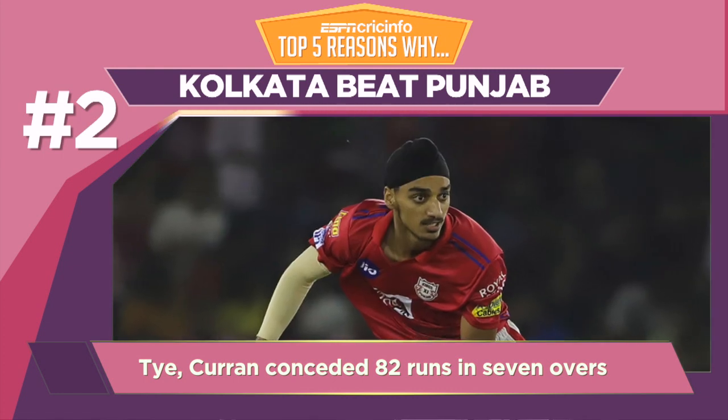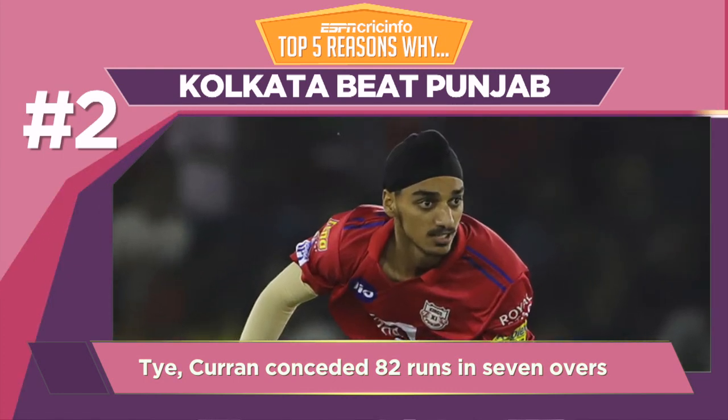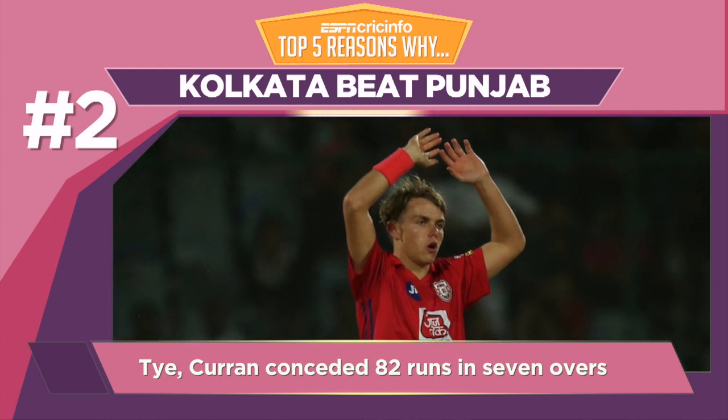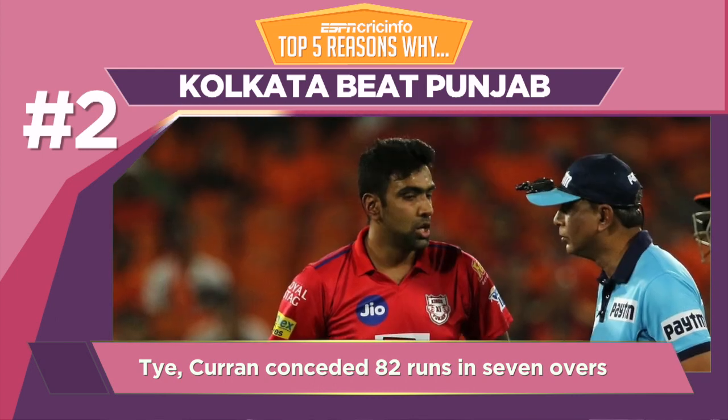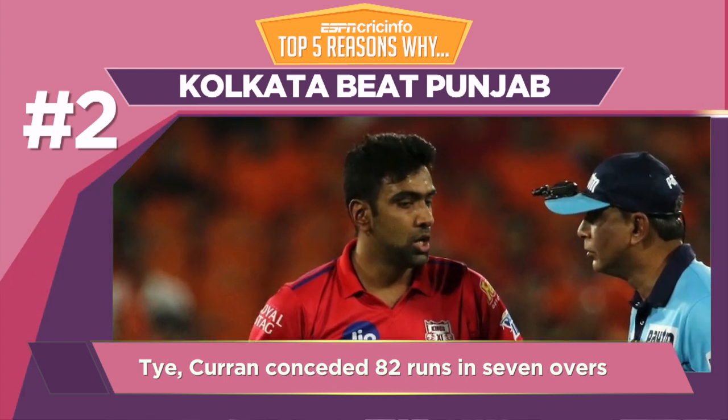However, the other Punjab bowlers failed to support him. Four bowlers went for more than 10 runs an over, while Captain Ashwin had an economy rate of 9.5.